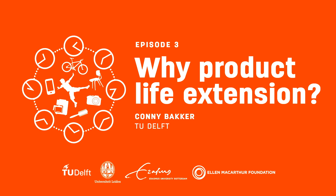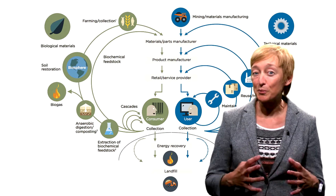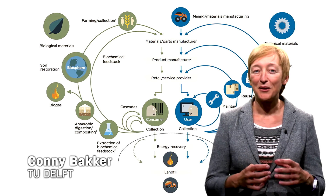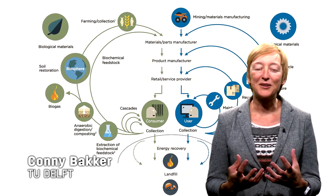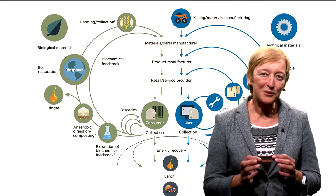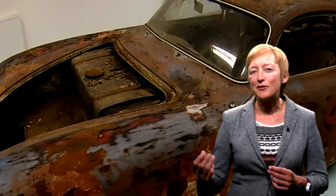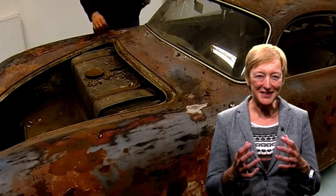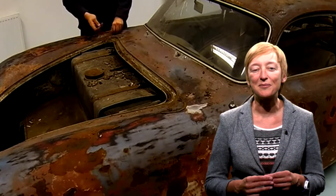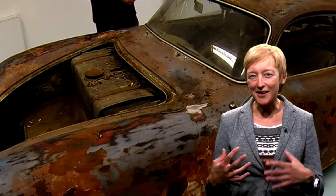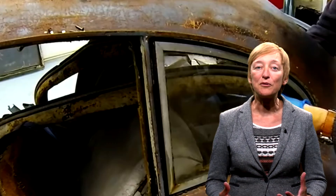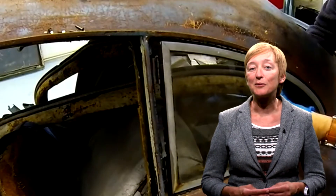In this talk I'll focus on the inner loops of the butterfly diagram. Those are the smaller loops about maintenance, reuse and remanufacturing. The smaller the loop, the greater the profitability of the overall system. For instance, if I repair a product instead of having it recycled, I am saving a lot of resources and energy. So keeping a product at its highest value for as long as possible makes sense, both from an economic and an ecological perspective.